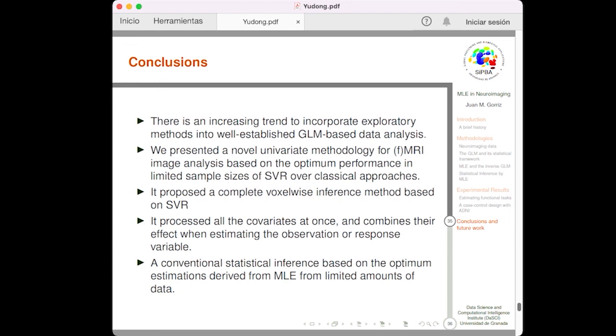So we are concluding. There is an increasing trend to incorporate exploratory methods into well-established GLM-based data analysis. We present a novel univariate methodology for fMRI image analysis, structural, any modality. We can analyze it with the proposed methodology. It proposes a complete voxelwise inference and processes all the covariates at once. This is the main finding of our method that combines the effects of all the covariates when estimating the observation or response variable. All this work results in a conventional statistical inference based on the optimal estimation derived from machine learning with limited amounts of data.